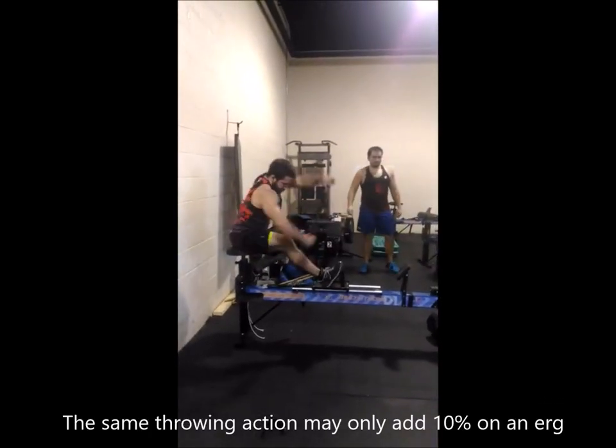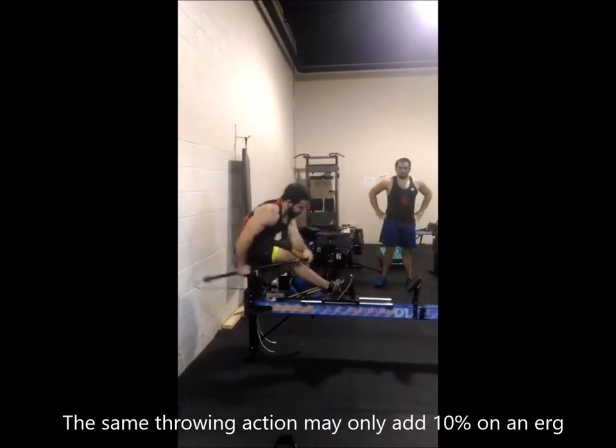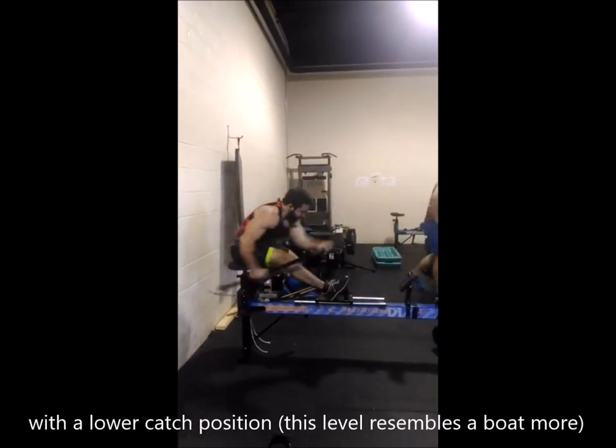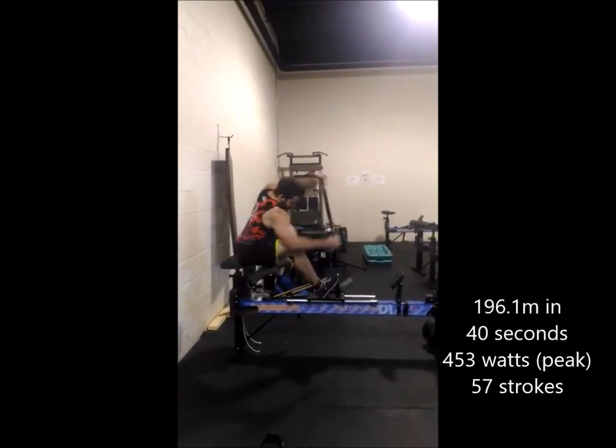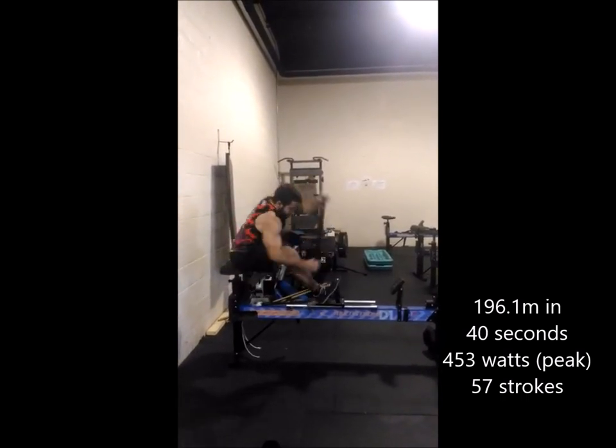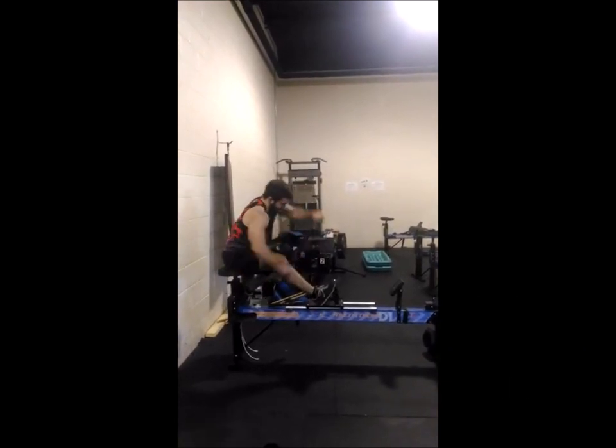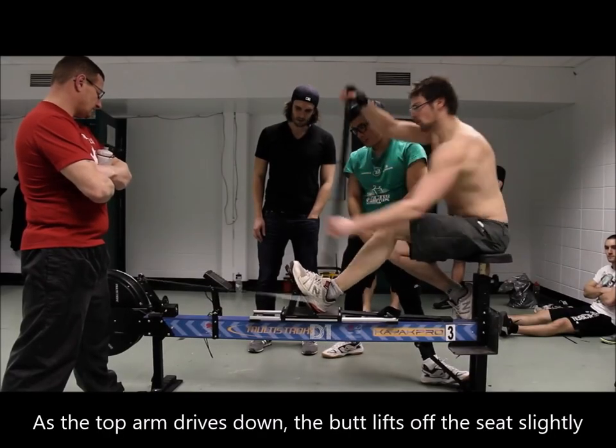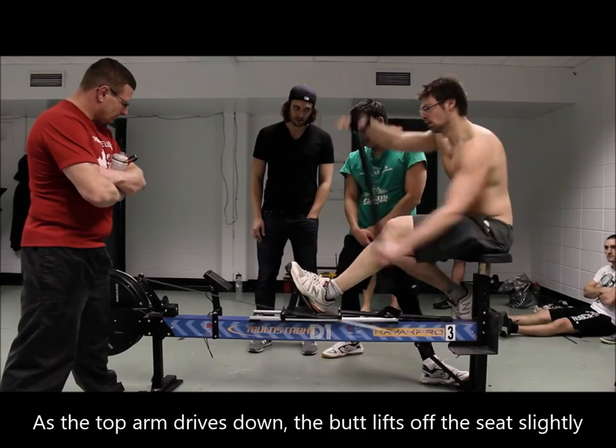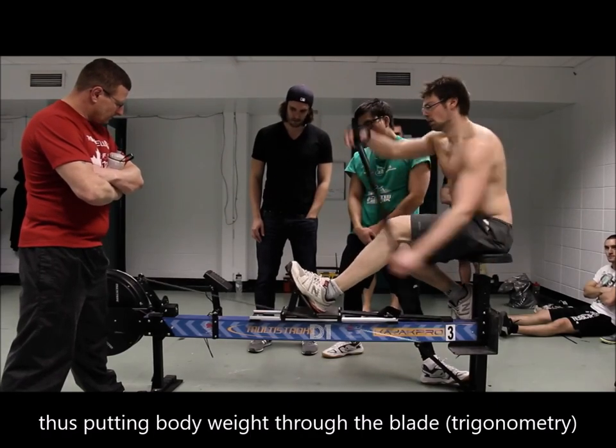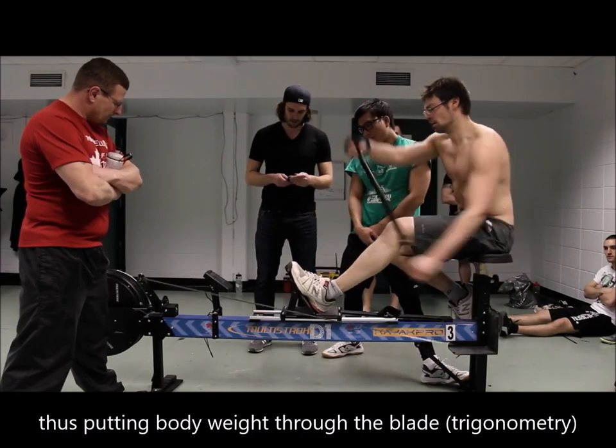The rowing shell has better glide qualities compared to a canoe or kayak. For this type of erg, one needs to have a faster rate in order to keep the erg moving. These paddlers use an abbreviated throwing action, but both appear to be putting their body weight through the paddle, through the top arm.